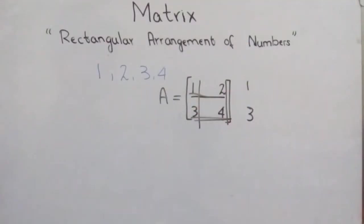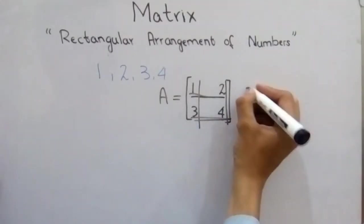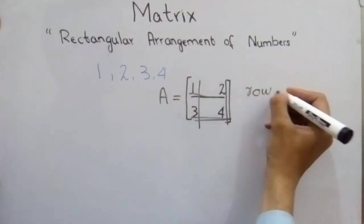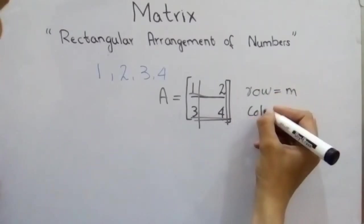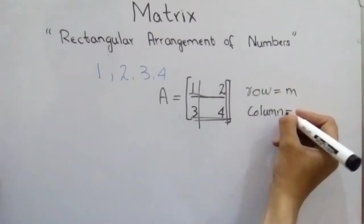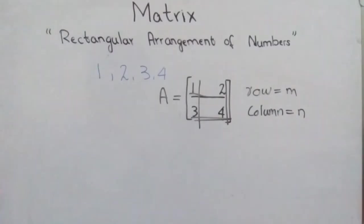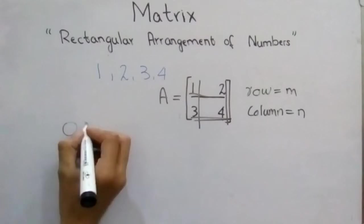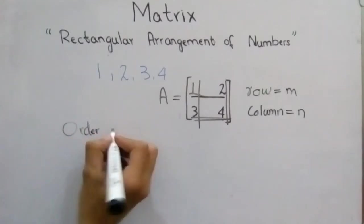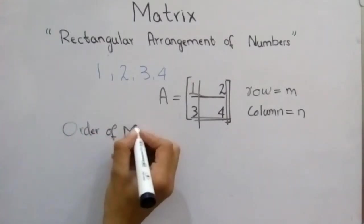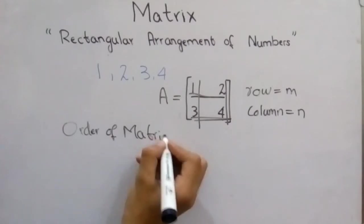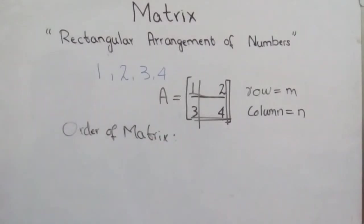Row is represented by m and column is represented by n. Another thing we have to learn about matrix is its order. Order of a matrix.